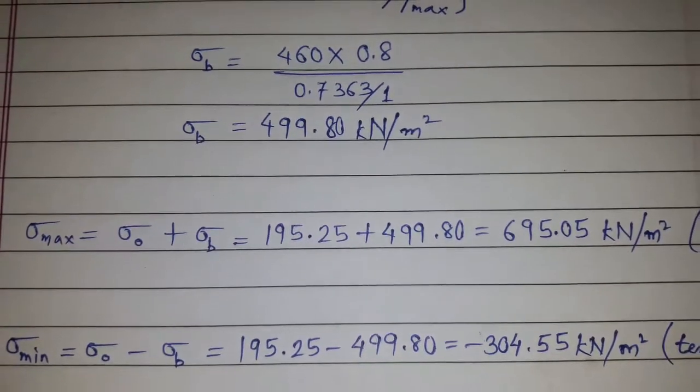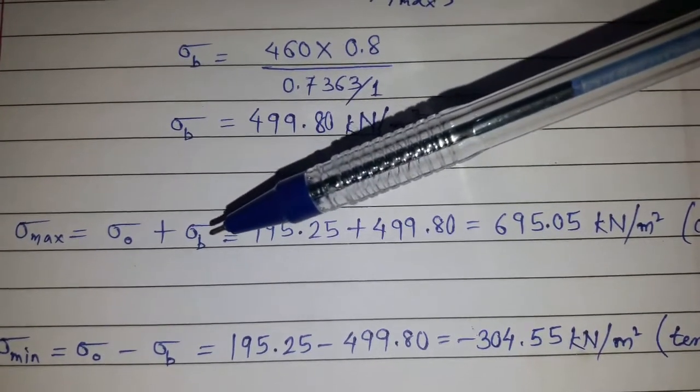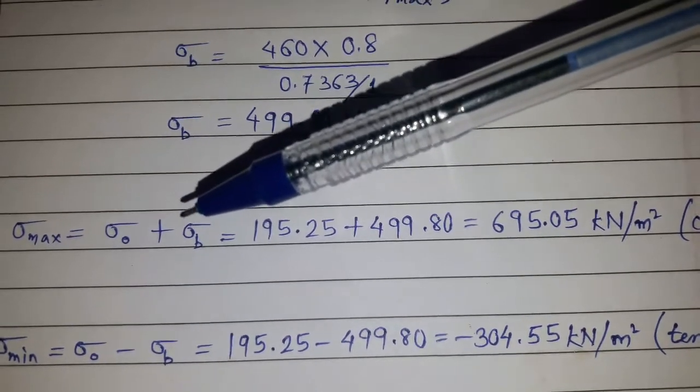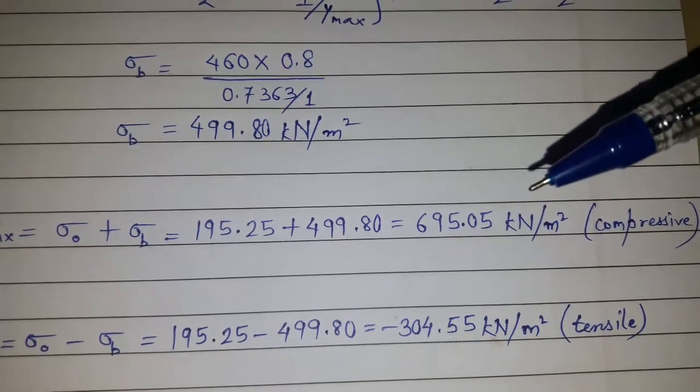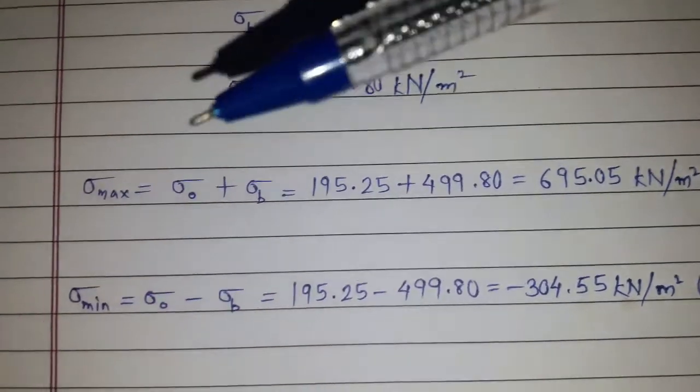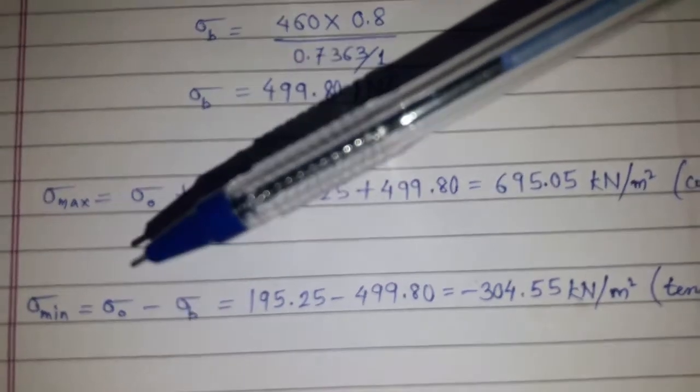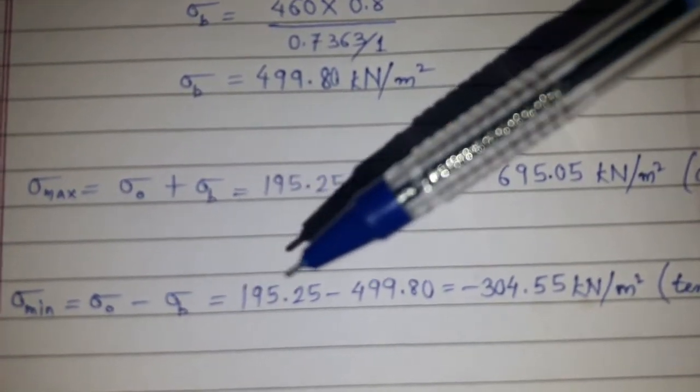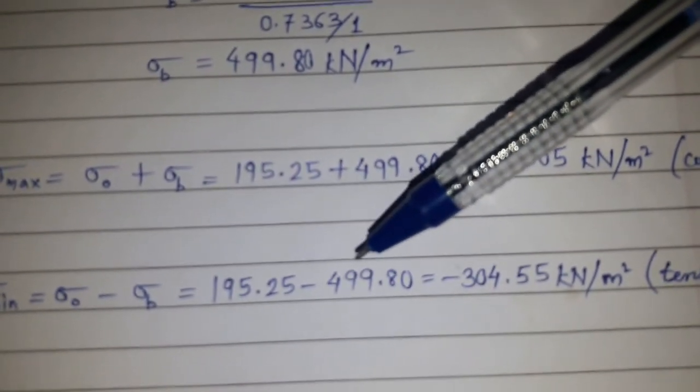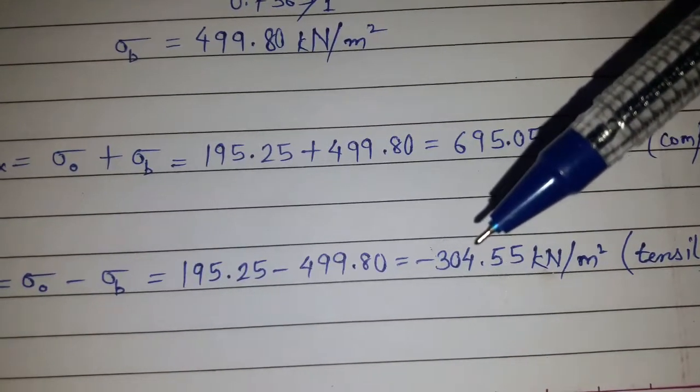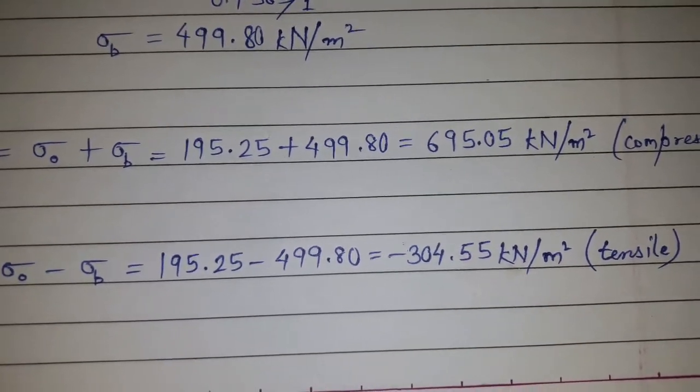Now we need to find the resultant stresses. So sigma max equals sigma naught plus sigma b, that is direct plus bending stress. We got 695.05 kN/m² which is compressive. And sigma minimum equals sigma naught minus sigma b, that is the direct stress minus bending stress, where we got 195.25 minus 499.80 and we got minus 304.55 kN/m², so hence this is tensile.